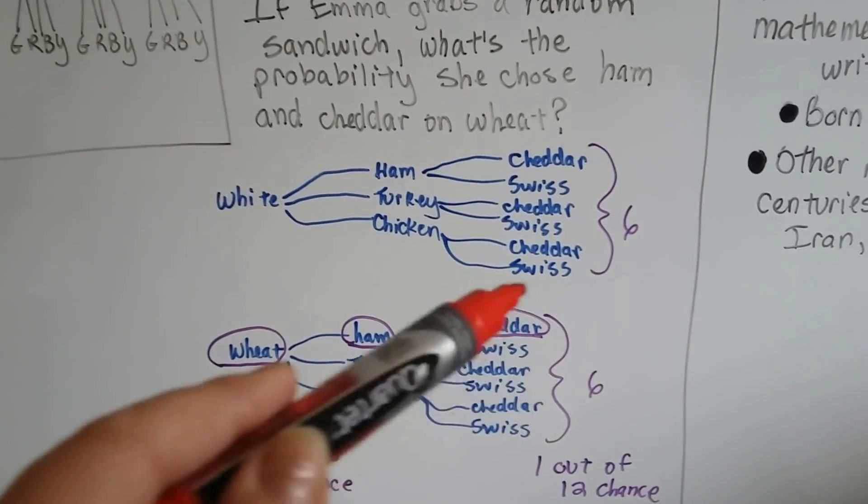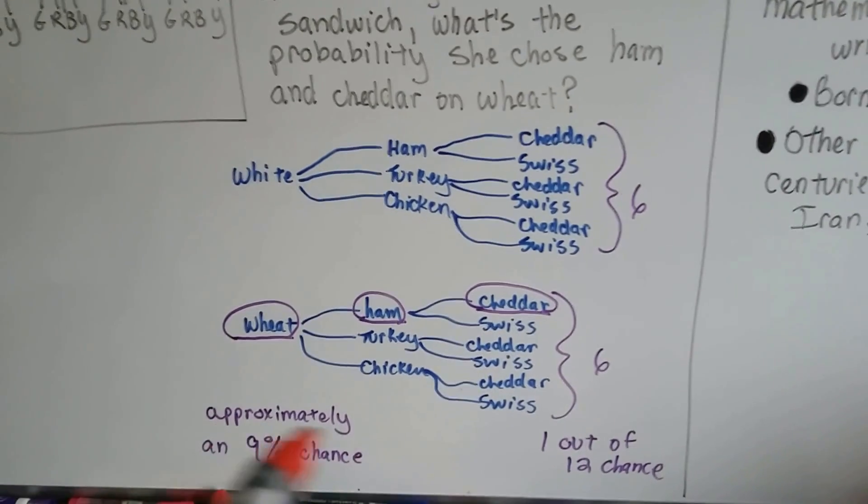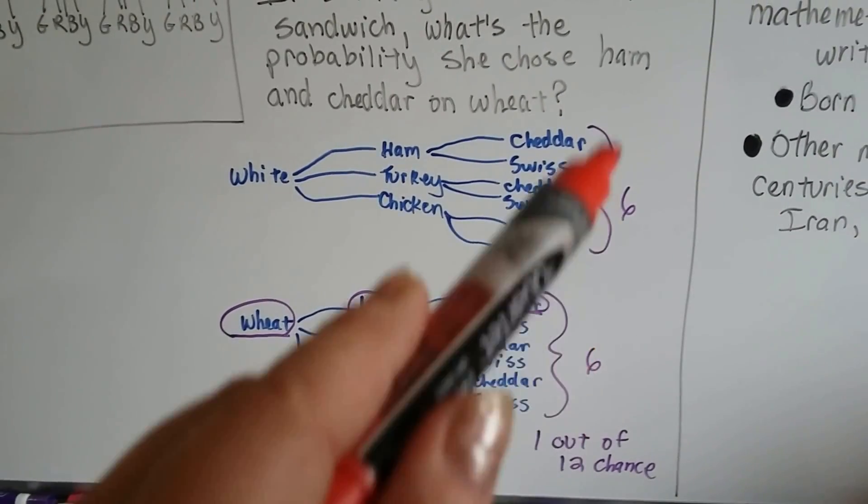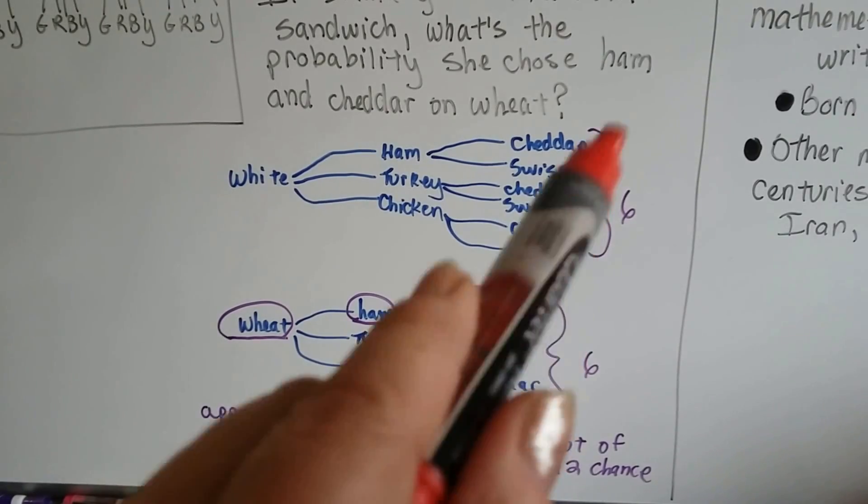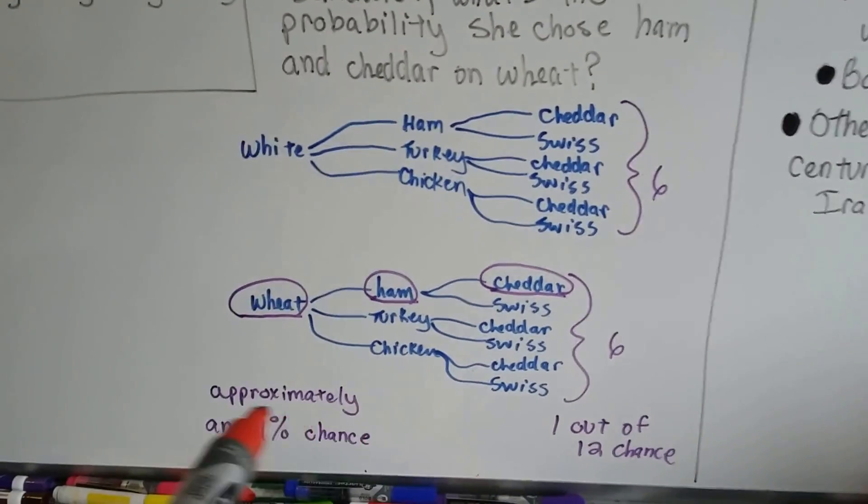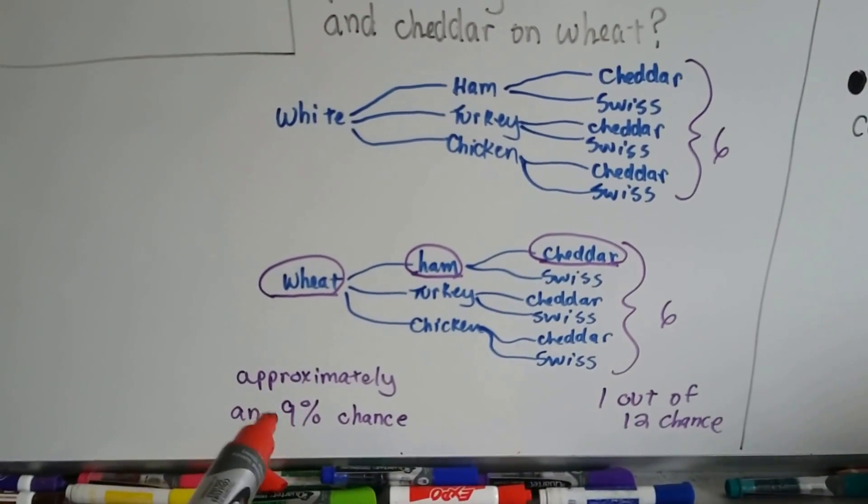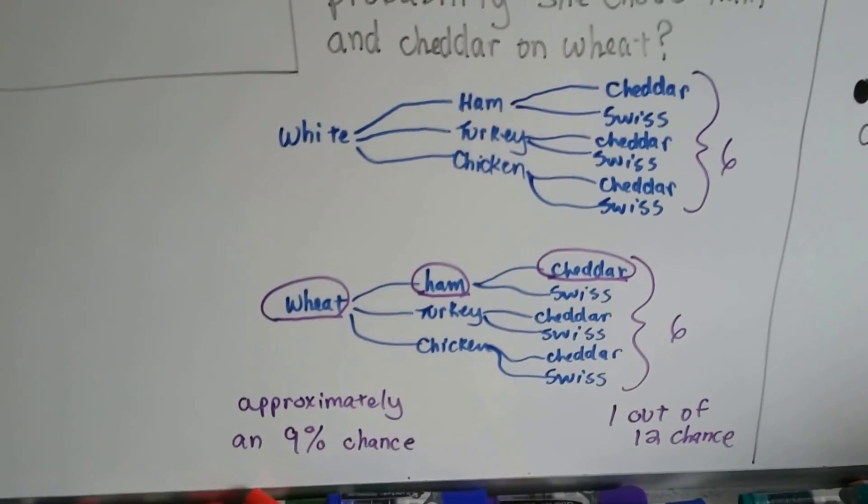There's six here for white bread and six here for wheat bread. She had a one out of a twelve chance, because there's six possibilities, of getting the wheat, ham, and cheddar, see? It was a one out of twelve. It's 8.75, so it's approximately a nine percent chance, see?